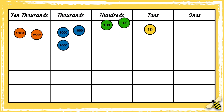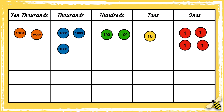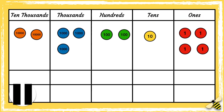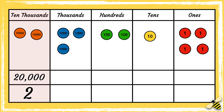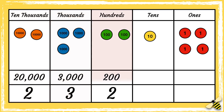What number is shown on the grid? Pause the video to give yourself time to work out the answer, press play when you're done. We have two ten thousands, we have three thousands, we have two hundreds, we have one ten and we have four ones, so the number is twenty three thousand two hundred and fourteen.